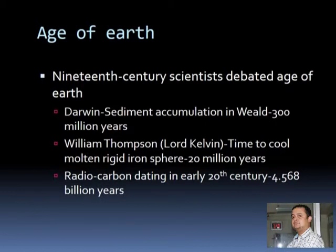Of course, that calculation was quite flawed — there were many mistakes in his measurement. But still, it was a remarkable achievement: the Earth is really much older than the 5,000 or 6,000 years the Bible suggests. At the same time, Darwin's contemporary William Thomson, later known as Lord Kelvin — the person behind absolute zero and the Kelvin temperature scale — was also working on this question.